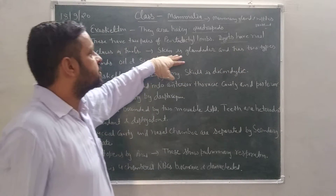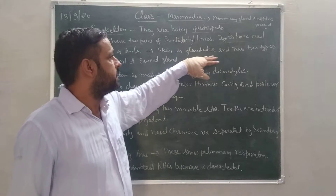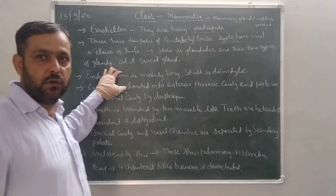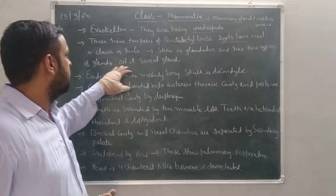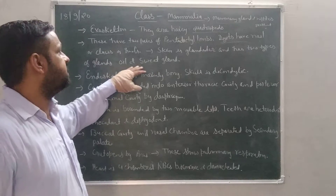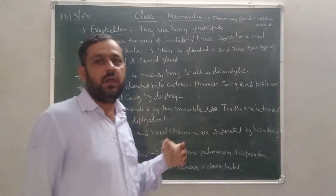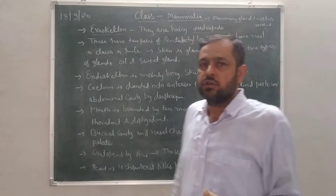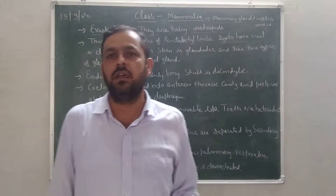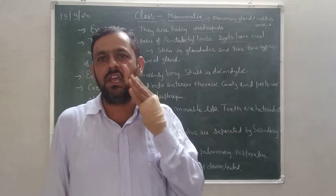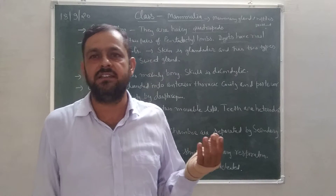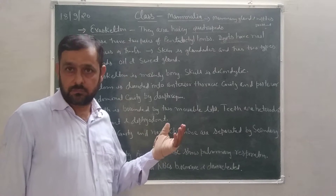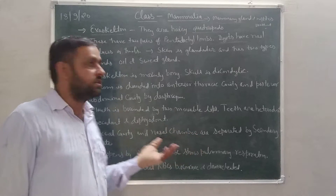Next character: skin is glandular and has two types of glands — oil glands and sweat glands. Sweat glands secrete sweat and oil glands secrete oil. Some people have oily skin because these glands secrete oil, and sweat is secreted in summer season.